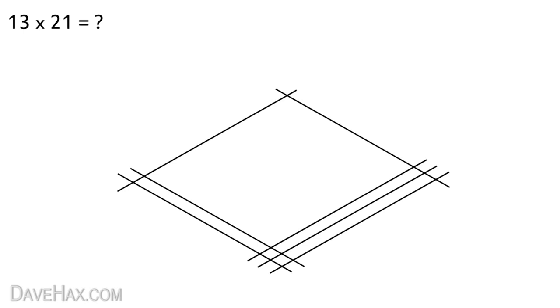Once we've drawn it out, we need to separate it into three separate zones where the lines cross like this. Then starting from the right-hand zone, we need to count how many times any of the lines cross. In this case, three. We write that here and move on to the next zone.